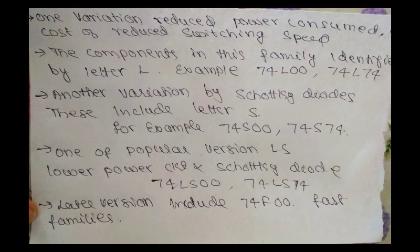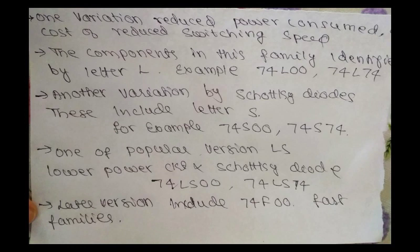The 7400 family was developed with alternative versions. One variation has reduced power consumption with low-cost switching speed; the components in this family are identified by the letter L, for example 74L00 and 74L74. Another variation uses Schottky diodes with internal circuits to reduce switching delay, identified by the letter S, for example 74S00 and 74S74.